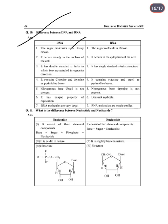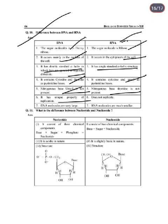Next: Difference between DNA and RNA. DNA contains deoxyribose sugar; RNA contains ribose sugar. DNA occurs in the nucleus; RNA occurs in the cytoplasm. DNA is double-stranded alpha helix; RNA is single-stranded. DNA contains cytosine and thymine as pyrimidine bases; RNA contains cytosine and uracil. DNA has the unique property of replication; RNA has no such property. DNA molecules are very large; RNA molecules are small.